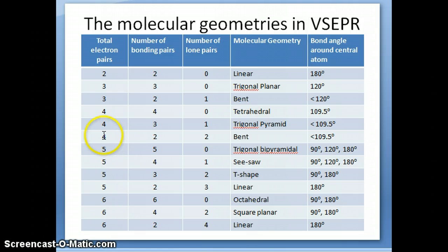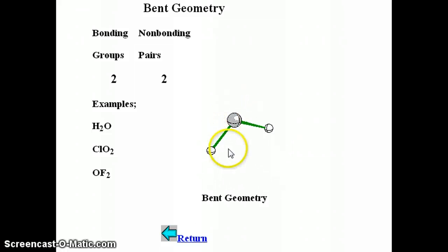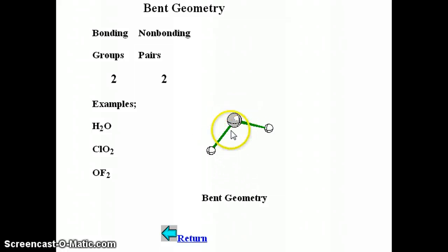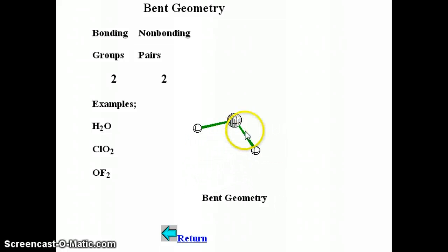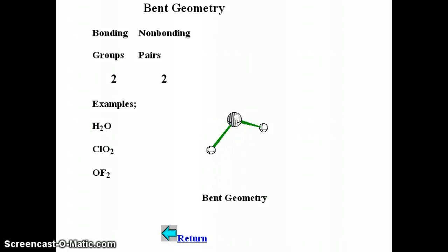The last possibility with four electron pairs is two bonding and two lone pairs. This gives what we call the bent molecular structure — essentially a tetrahedral arrangement but with two lone pairs instead of two bonding positions. The angle is again less than 109.5 degrees. For water, for example, the angle is about 105 degrees, but I don't want to give a specific value because it really depends on the molecule and the size of the atoms involved.